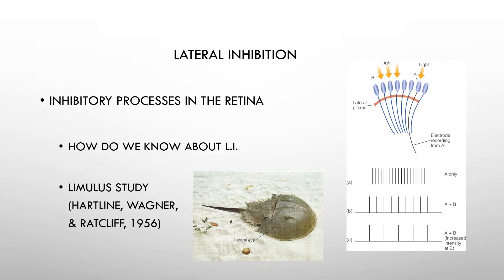These inhibitory processes in the retina come out as lateral inhibition. Originally this research was done on a horseshoe crab, the limulus, by Hartline and his colleagues. They were looking at one of the eyes of the limulus and its ommatidium — receptors that each have their own lens, a really different kind of eye structure than we have.